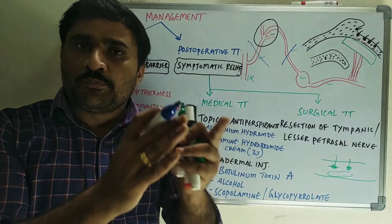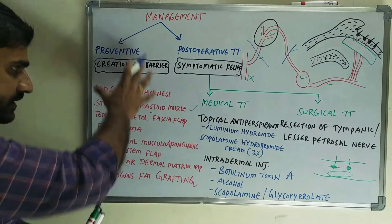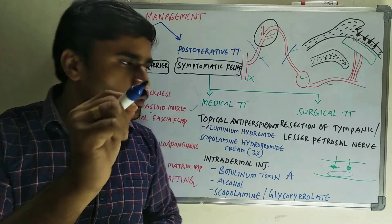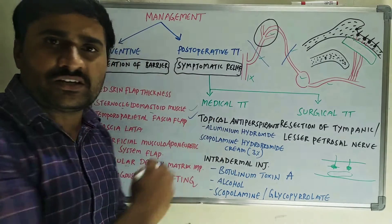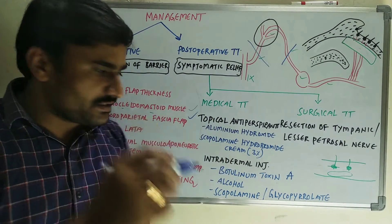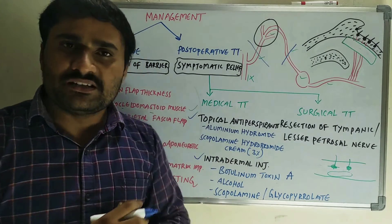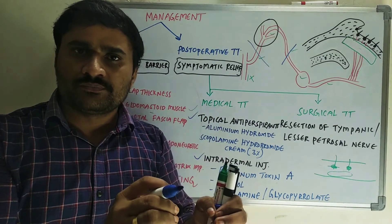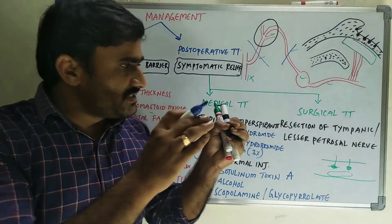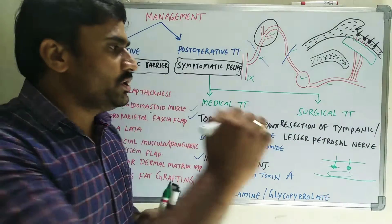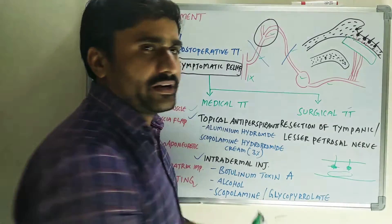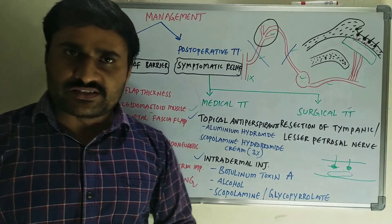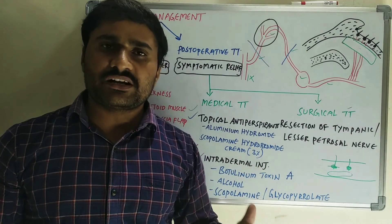These are the two options under surgical treatment, but they are rarely performed. You should aim to prevent Frey's syndrome first. If it happens, first go for topical applications, then intradermal injections. Only if there is severe discomfort and proper indication will you go for surgical treatment, but it is rarely indicated.